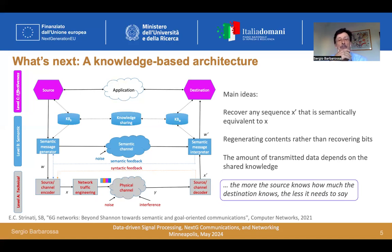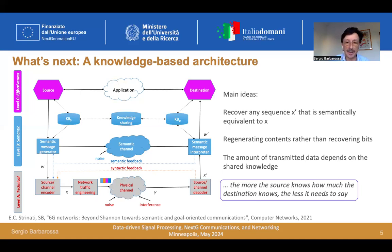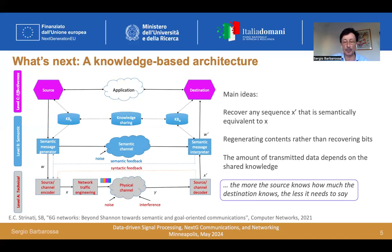Another important point is that the amount of data that needs to be transmitted depends on the shared knowledge between transmitter and receiver. This is actually essential in all communication. Even now, I'm speaking to an audience very knowledgeable in signal processing, communications, and networking, so I am taking advantage of your knowledge. If I had to deliver the same talk to a random person on the street, I would need to say many more words. This is an important point that should also be formulated in mathematical terms.